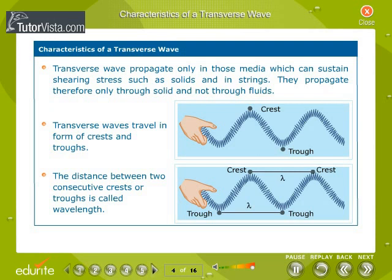Transverse waves propagate only in those media which can sustain shearing stress such as solids and in strings. They propagate, therefore, only through solid and not through fluids. Transverse waves travel in form of crests and troughs. The distance between two consecutive crests or troughs is called wavelength.